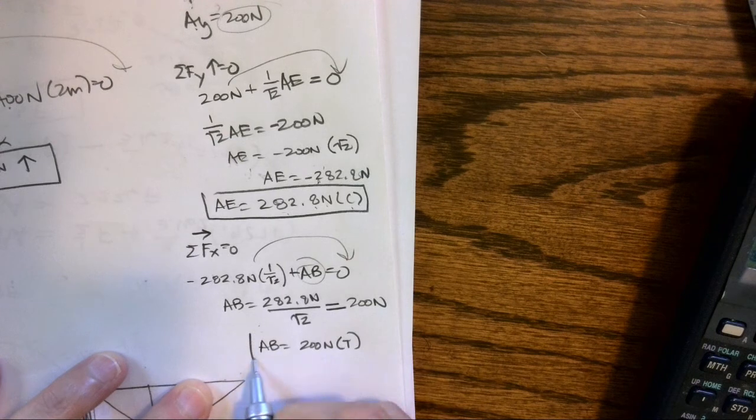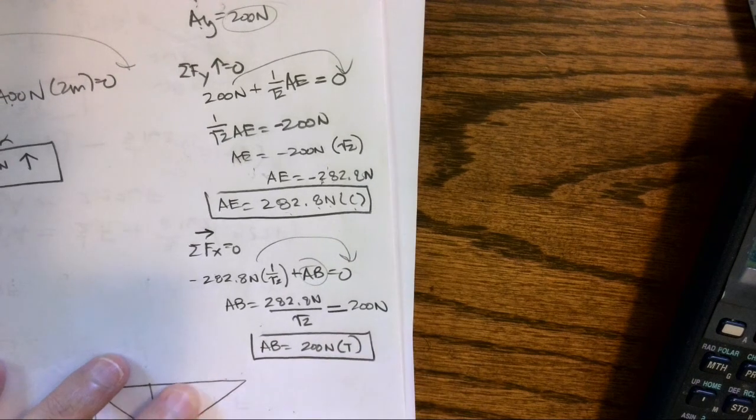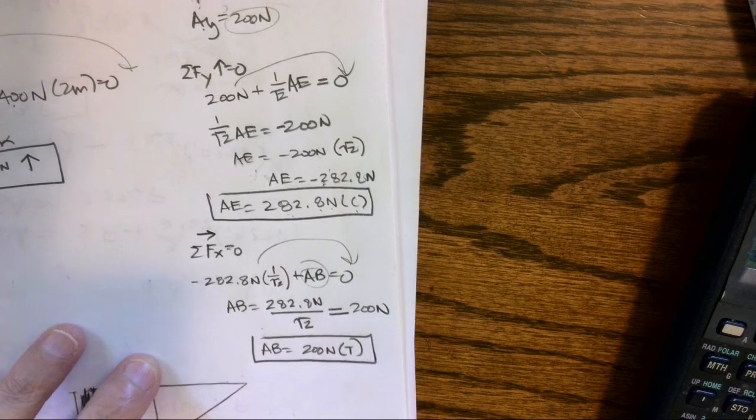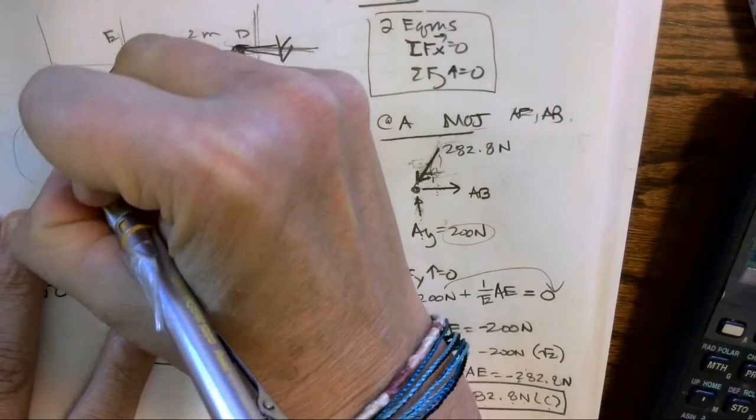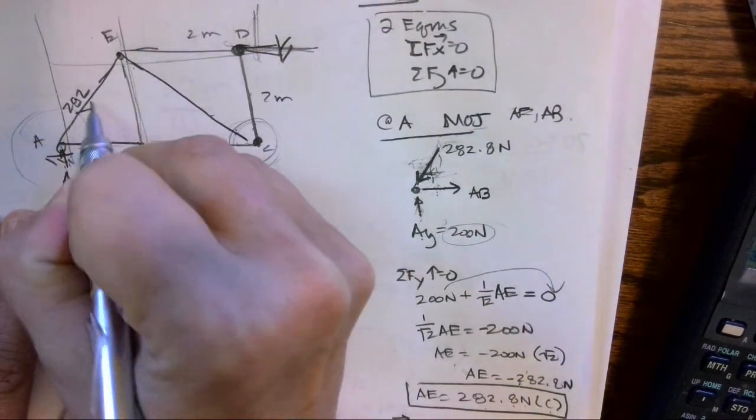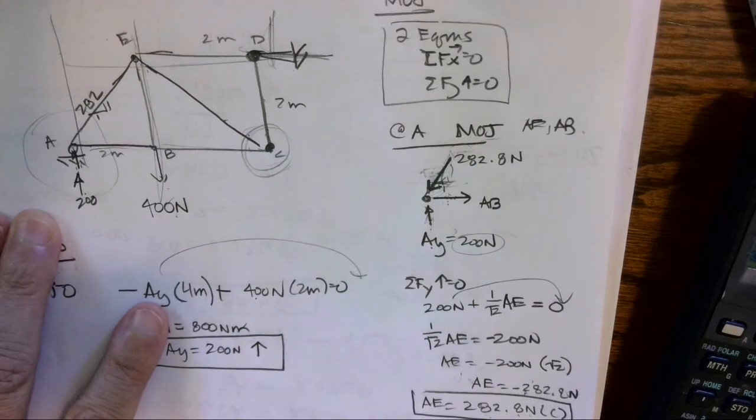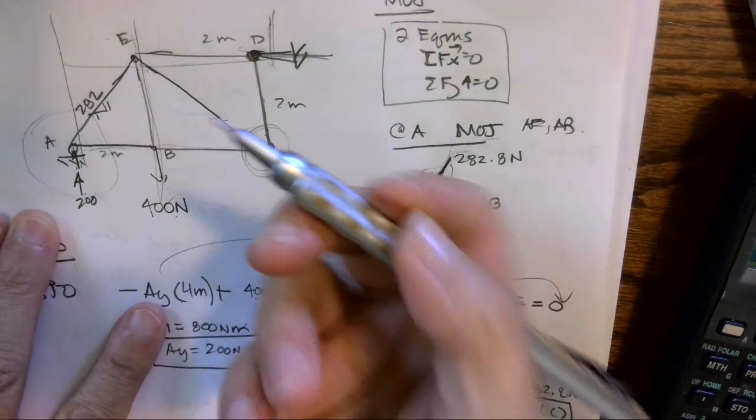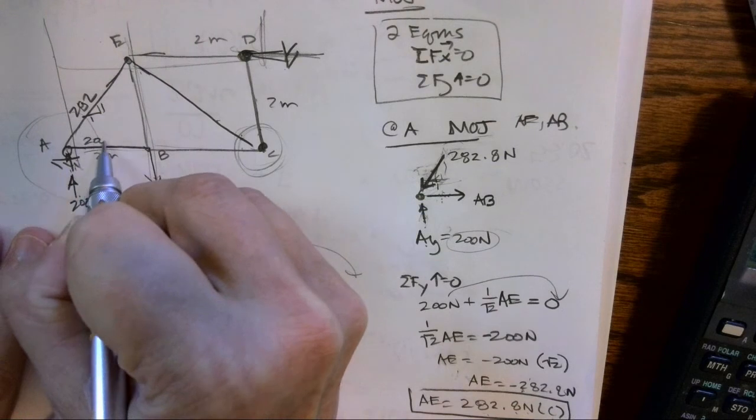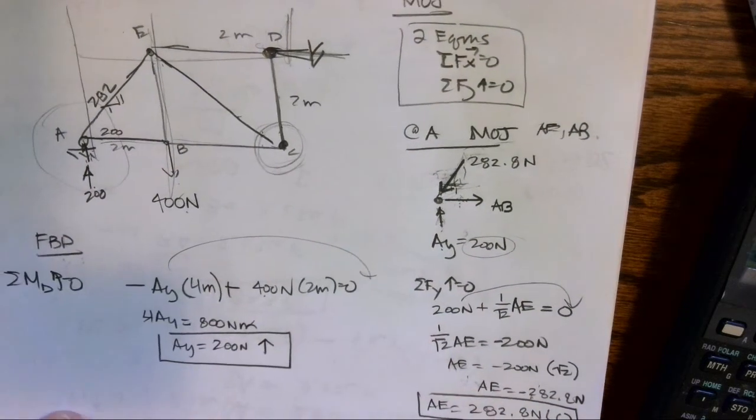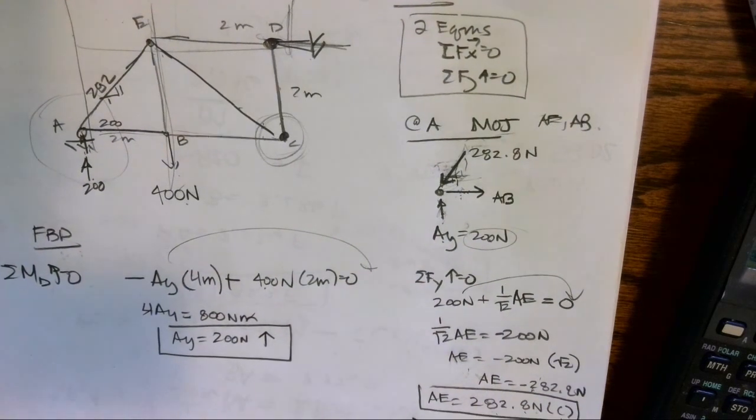Okay, so AB equals 200 Newtons. It's a positive value—I assumed it to be in tension, so it is indeed a tension member. If I go back and look and I note that this is 200 and this is 282, and this is a one-one-root-two triangle, then I should have known from the get-go that this would also have the value of 200.